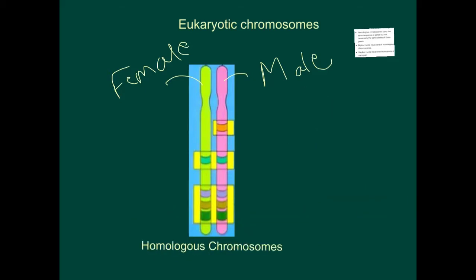The main point here is that both homologous chromosomes in a pair — let's say this is pair number 12 — have the same length. Both homologous chromosomes in pair number 12 have exactly the same length.